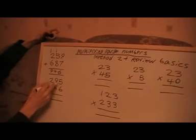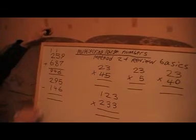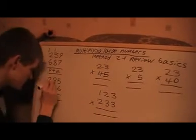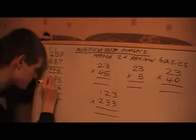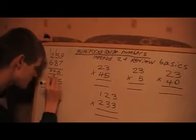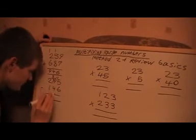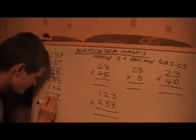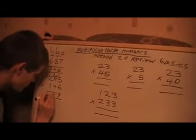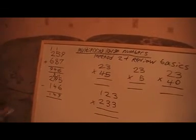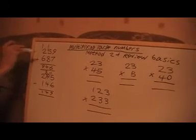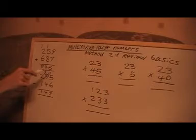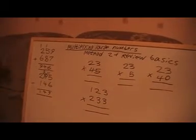This one we want to subtract 146 from 295. We can't take 6 from 5, so we'll borrow. That's 15, so now that's 9. That's 4 and that's 1, and there's the answer: 149.